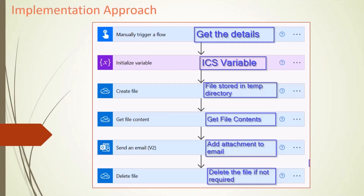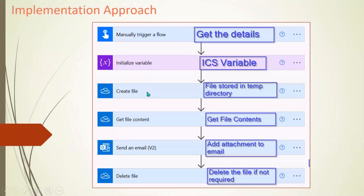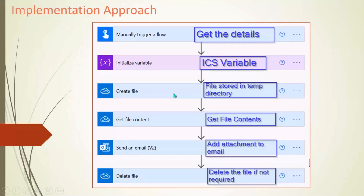In terms of implementation approach, here is a snippet of how the Power Automate flow has been implemented. I'm manually triggering the flow for demo purposes to show the input parameters. Then I'm initializing the ICS variable with all the properties. I'm creating the file using a OneDrive action, but SharePoint actions can also be used for creating and getting file content. After getting the file contents, I'm sending the ICS file as an attachment to the recipient. The file can then be deleted after the email is sent.